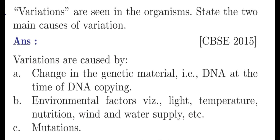Question 2: Variations are seen in the organisms. State the two main causes of variation. Answer: Variations are caused by change in the genetic material, i.e. DNA, at the time of DNA copying. This is also known as DNA copying error.